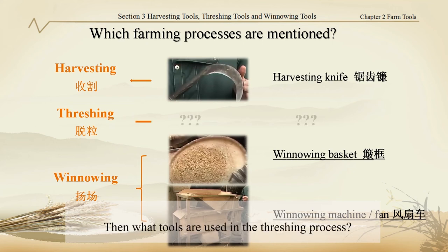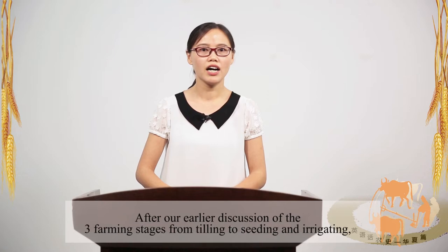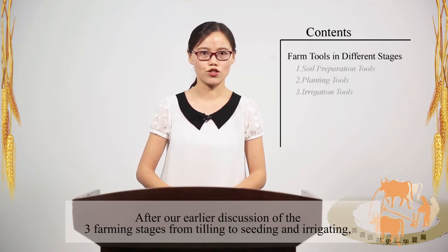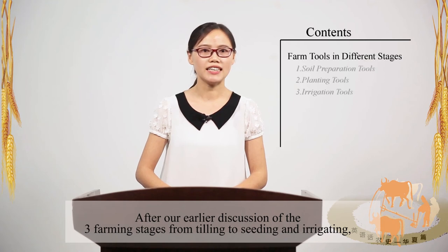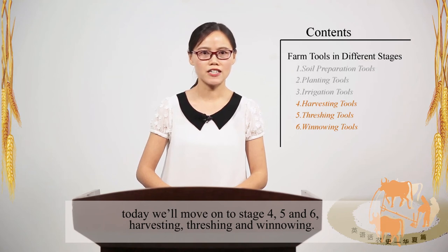Then, what tools are used in the threshing process? No idea? Don't worry, we'll find out the answer together in the later part of today's lecture. After our earlier discussion of the three farming stages from tilling to seeding and irrigating, today we'll move on to stage 4, 5, and 6: harvesting, threshing, and winnowing.